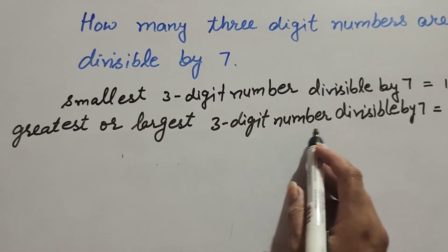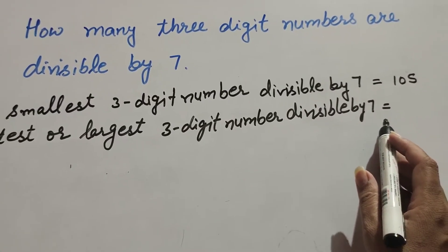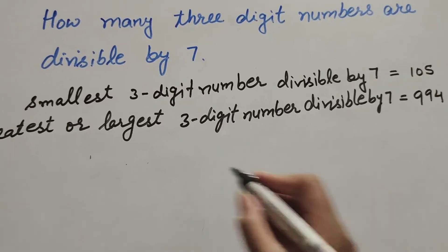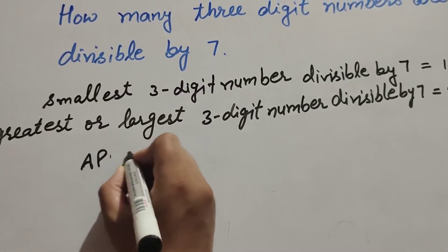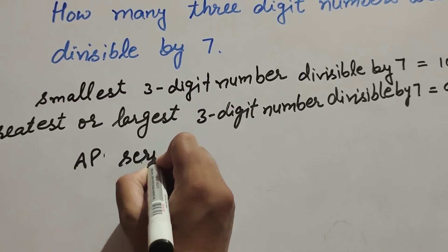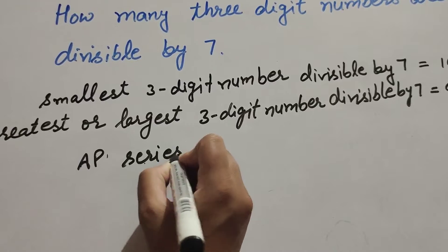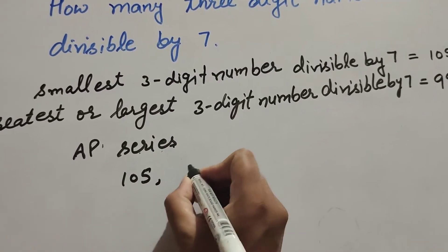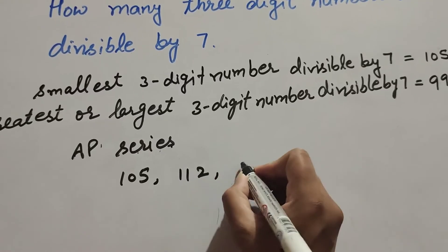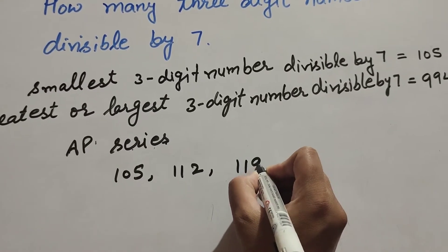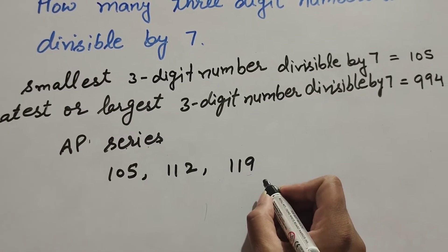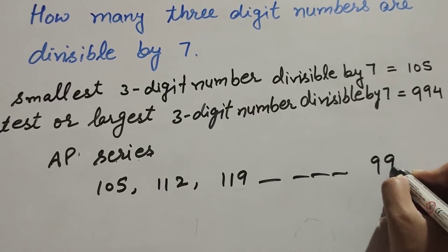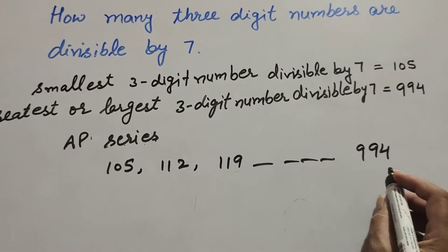The greatest or largest three-digit number that is divisible by seven is 994. So this forms an AP series: the first number divisible by seven is 105, then 112, then 119, and so on, up to the last three-digit number divisible by seven, which is 994.